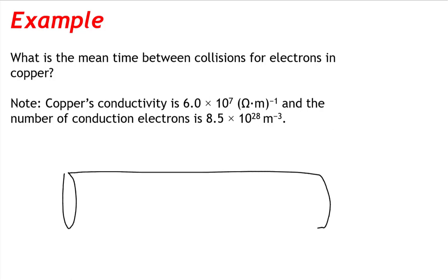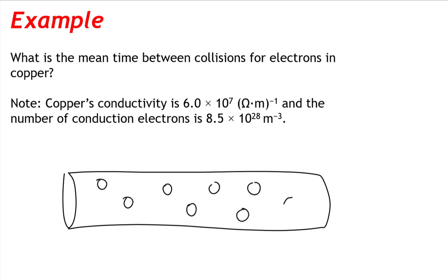Conductors, especially copper, the conductor that we commonly work with, has countless numbers of electrons that are free to move within its volume. Now these electrons are constantly colliding with other electrons and other particles in the copper. So one question we can ask ourselves is: what is the mean time between collisions of the electrons in this copper wire?